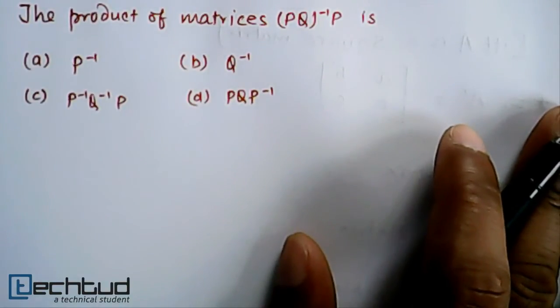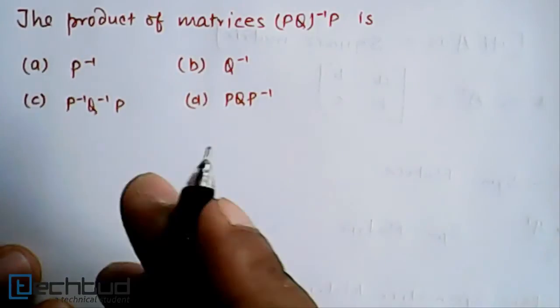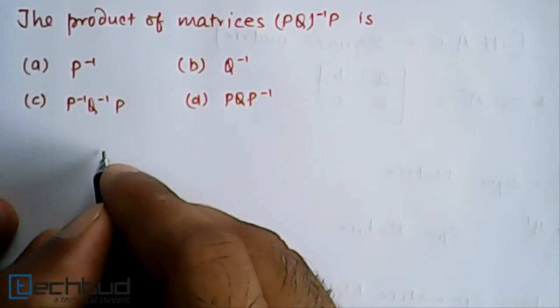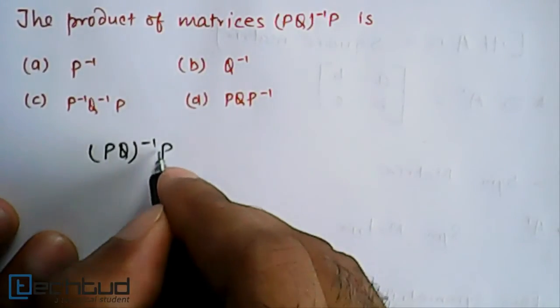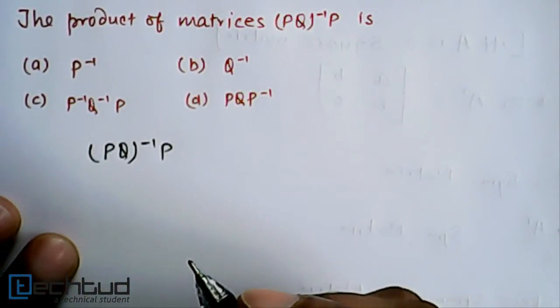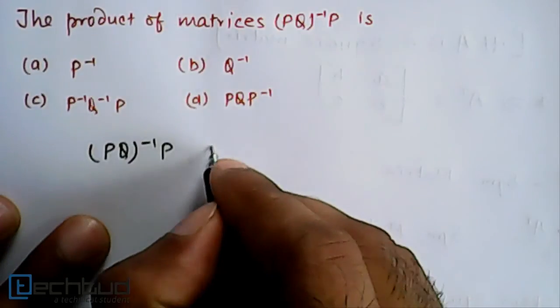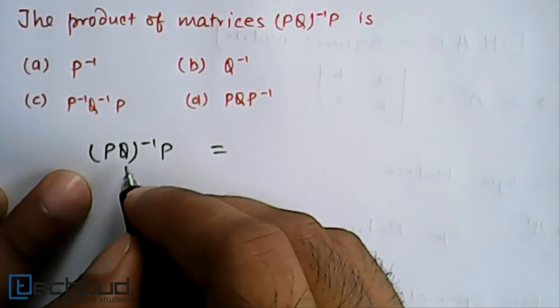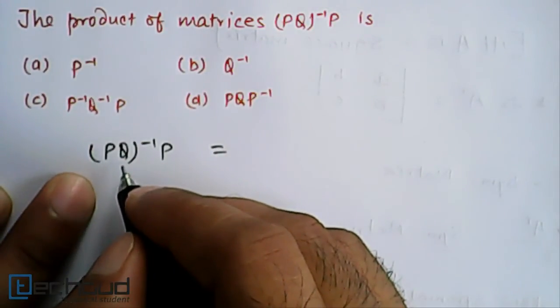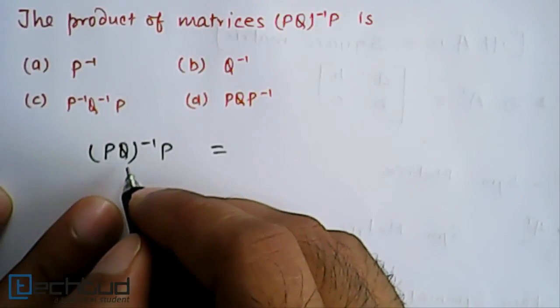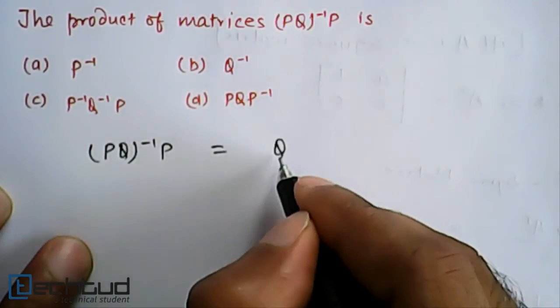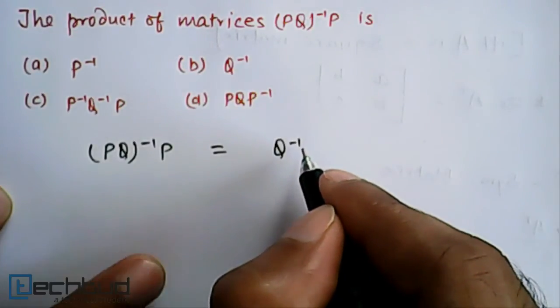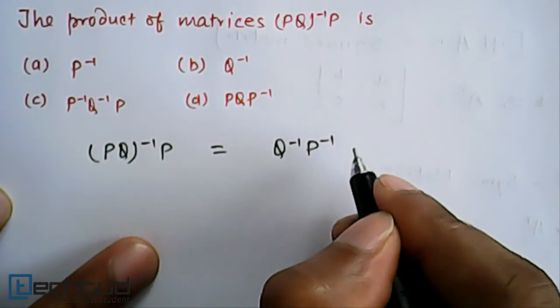The perfect way should be solving like this: (PQ)^(-1)P. It is given to us. We know that when we break this bracket in case of inverse, the order is changed, right? So it becomes Q^(-1)P^(-1).